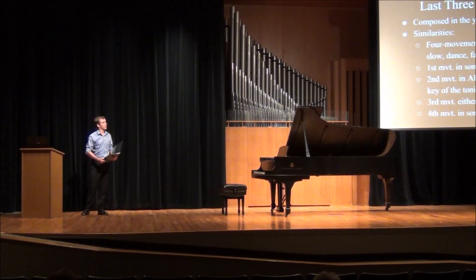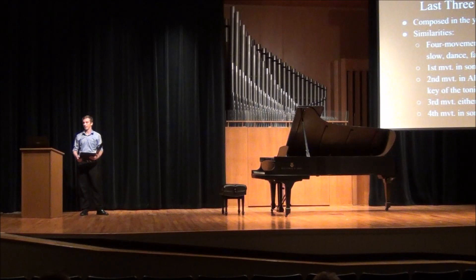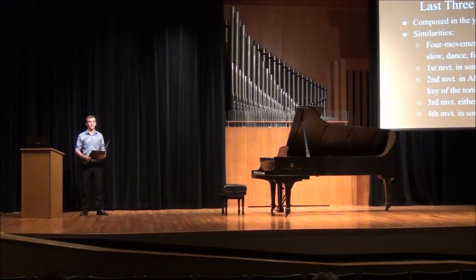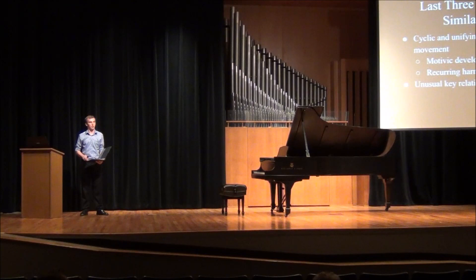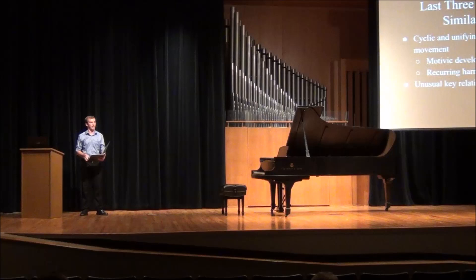Now I would like to mention the last three sonatas he composed, because the sonata I will perform tonight is one of these. They have many similarities: they were all composed in 1828, the year he died. They are all a four-movement structure favored by Beethoven — the first movement being fast or moderately fast, the second movement slow, the third movement usually in a dance form, and the fourth movement either in sonata form or sonata rondo form. These three sonatas are also examples of cyclicism, having unifying elements to interconnect the movements, done through motivic development, recurring motives that appear in multiple movements, and recurring harmonic progressions and melodic elements. They also use unusual key relationships and modulate often to remote keys.